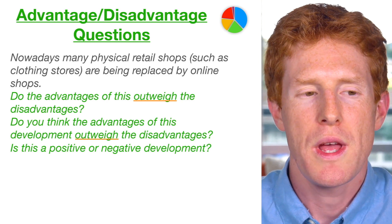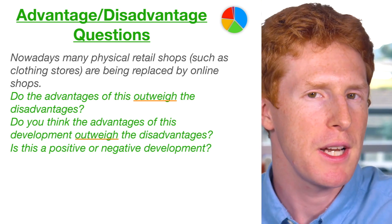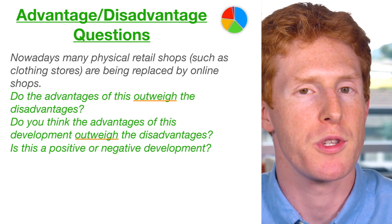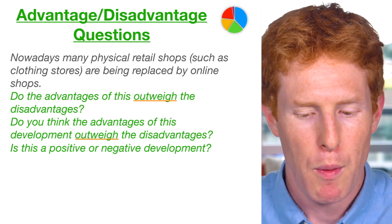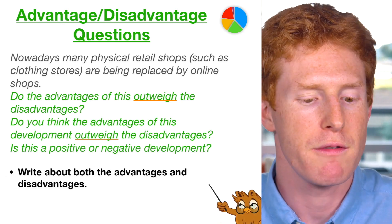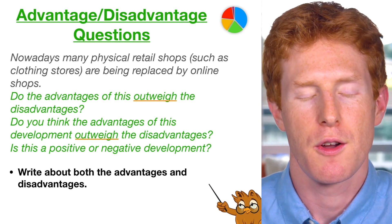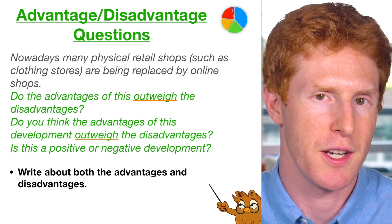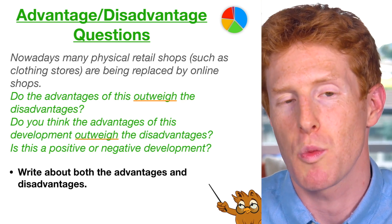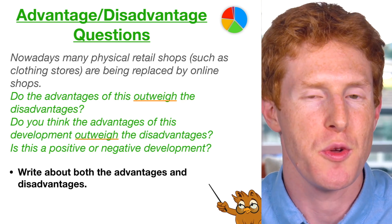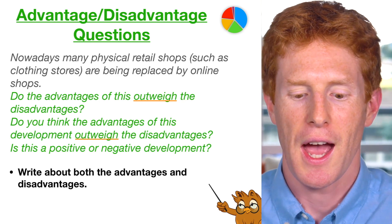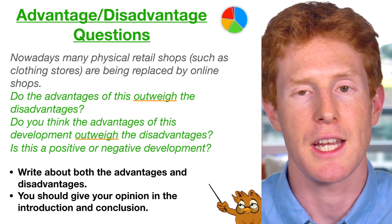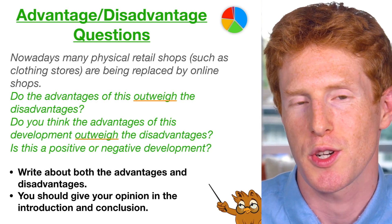With agree-disagree questions you can completely agree or disagree, so you don't need to write about both sides. However, for advantage-disadvantage questions I suggest that you write about both the advantages and the disadvantages and then include which side you think is more important. Remember, when you give your opinion you should put it in both the introduction and conclusion of your essay.